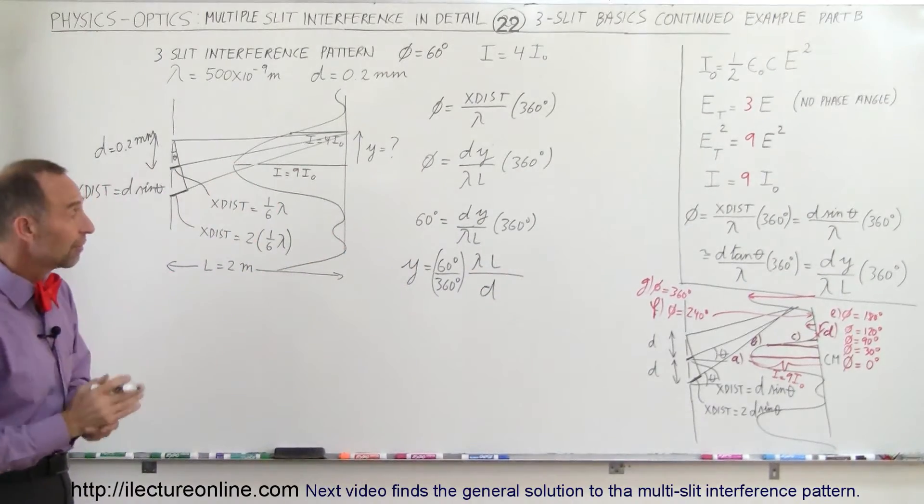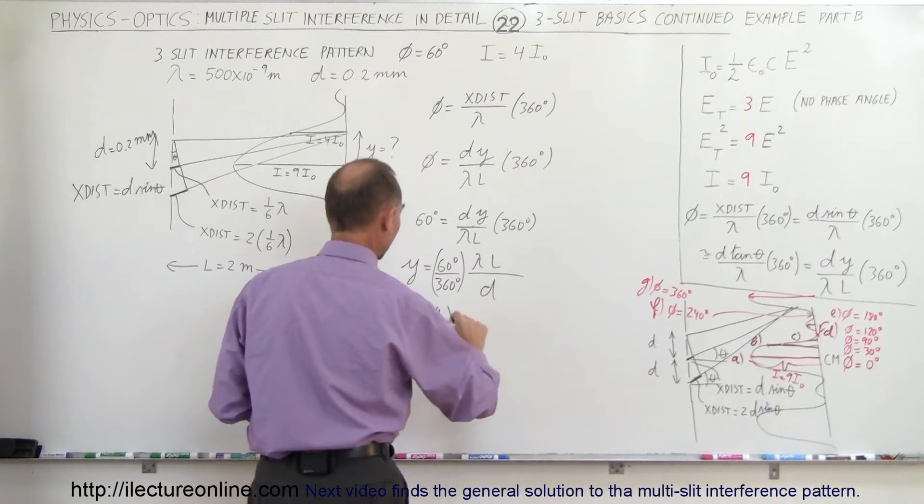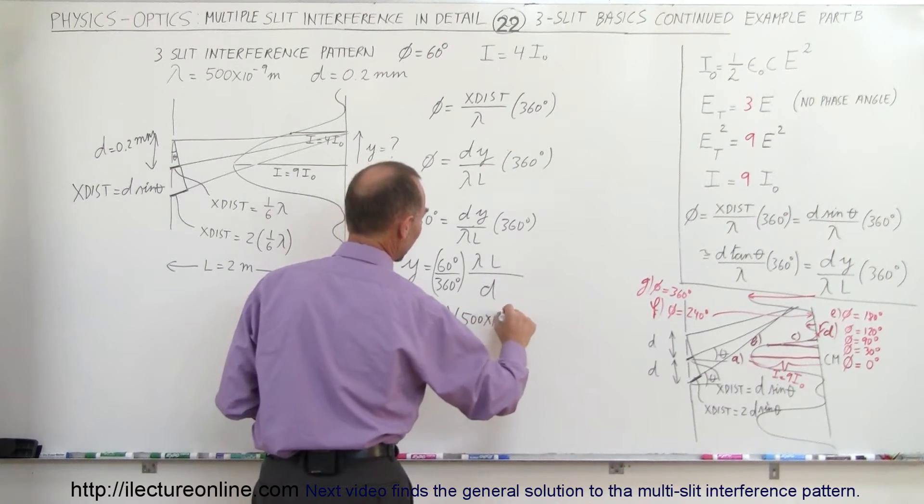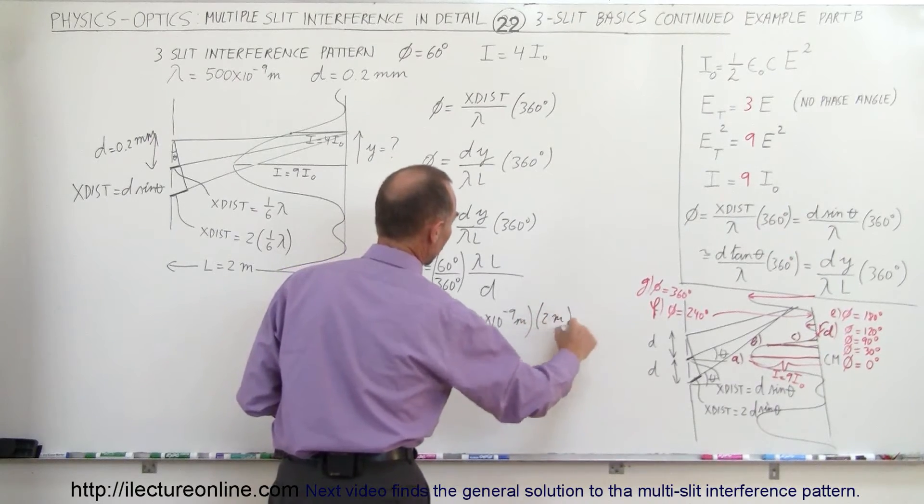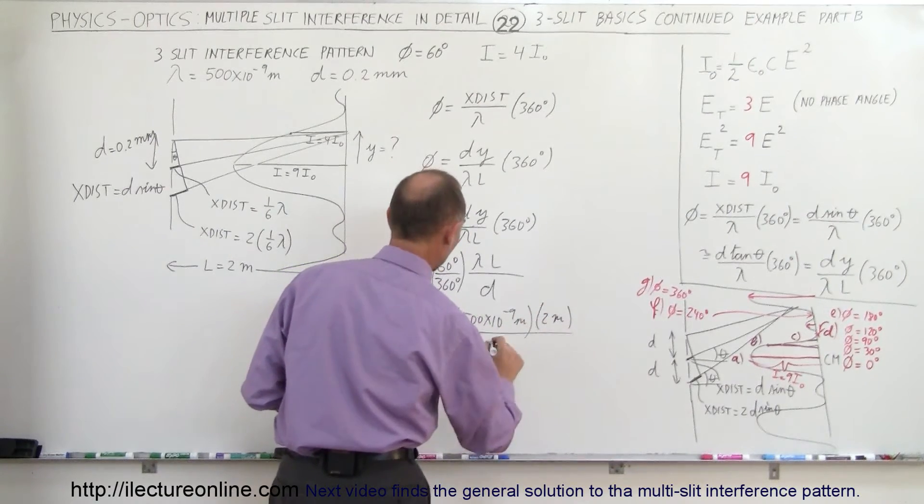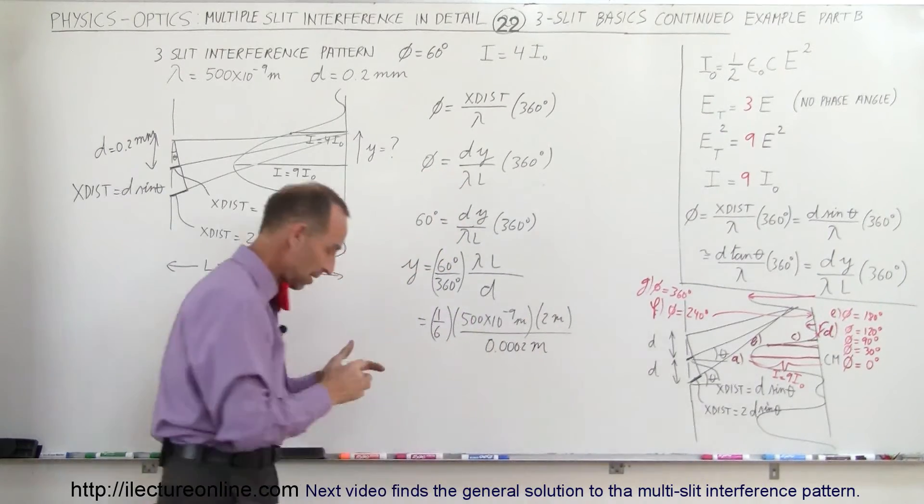Now all we have to do is plug in the values, so this is equal to 1 sixth times lambda, which is 500 times 10 to the minus 9 meters, 500 nanometers, the length is 2 meters, and the distance between slits is 0.0002 meters.